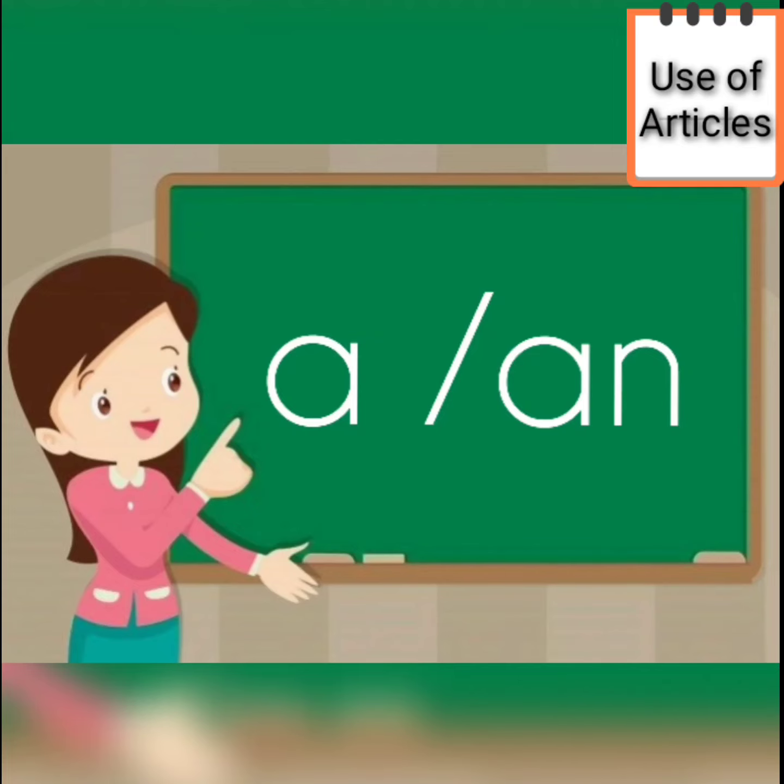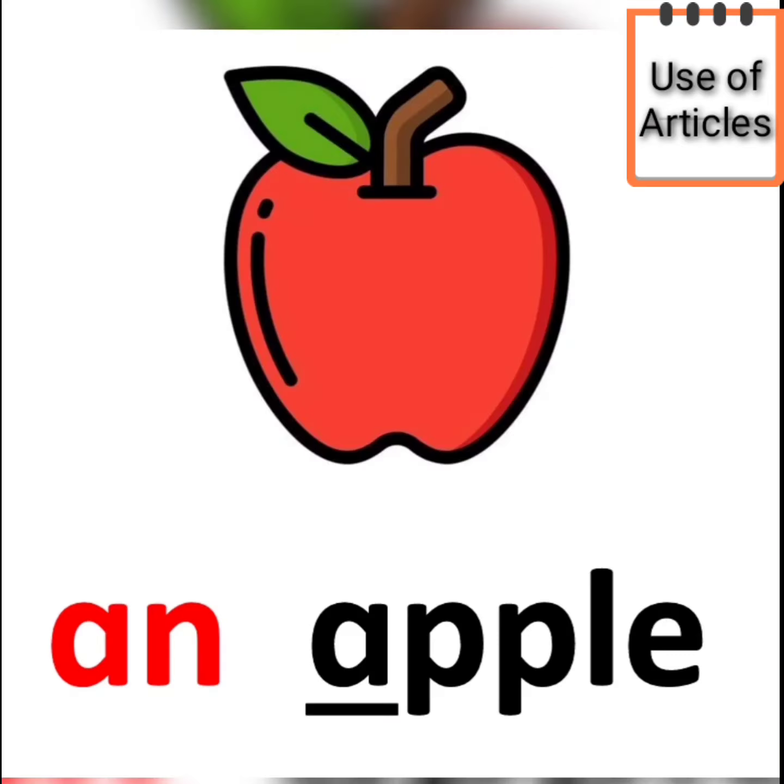Now, let us see some examples. An apple. Children, can you see, the word is starting with a vowel A. So, before apple, we will use an. An apple.